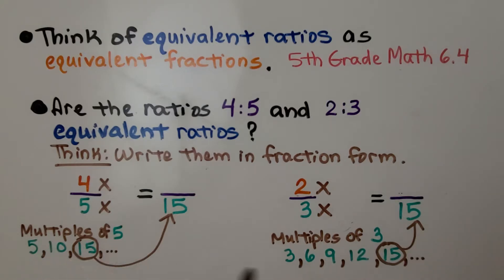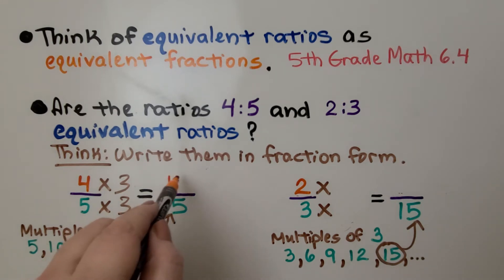I'm going to look for a least common multiple to give them a common denominator, a common second term. And 5 times 3 is 15, so we need to multiply the numerator by the same thing. That means our new first term, our numerator, is going to be a 12.